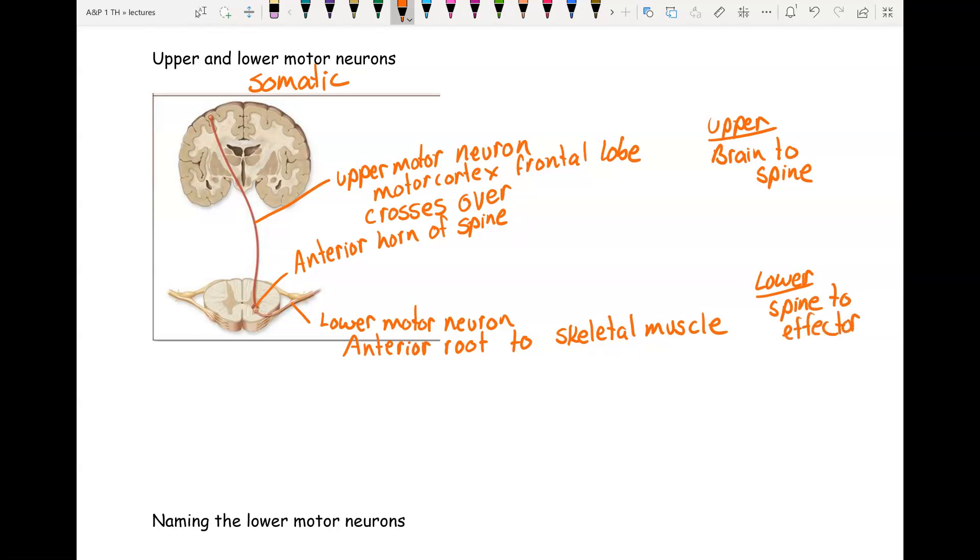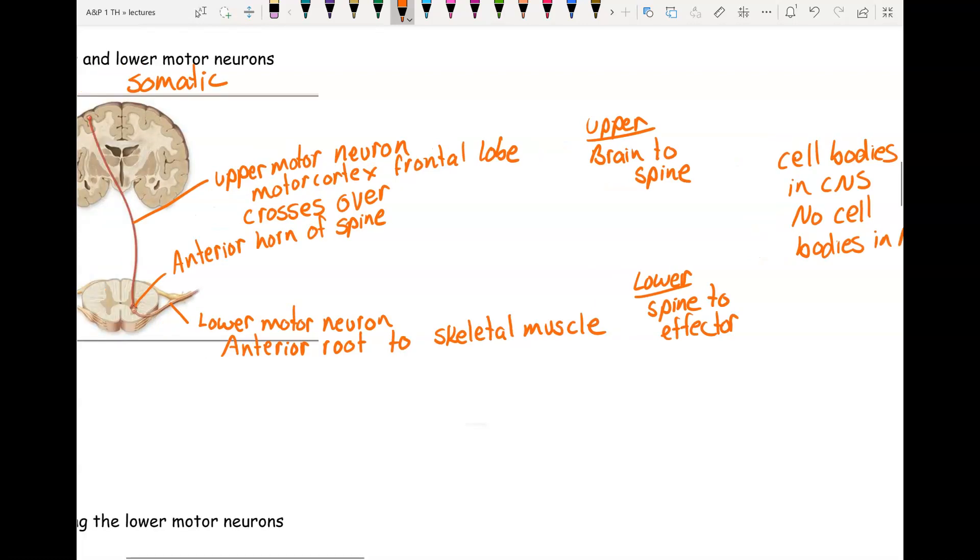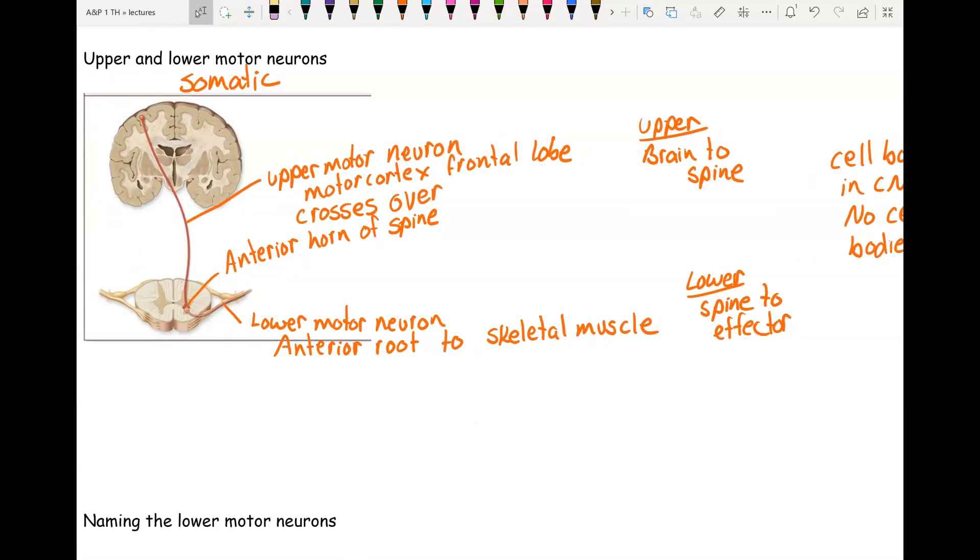Notice also that the cell bodies are all within the CNS. There's no cell bodies out in the PNS. Now that's for motor. You do have sensory cell bodies in the PNS, but not motor. And that is for motor somatic.